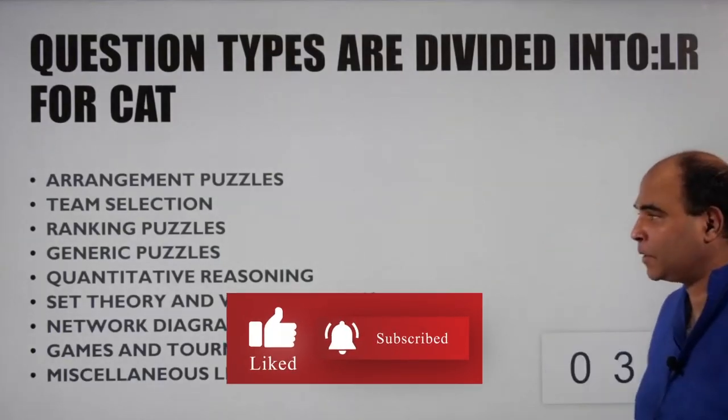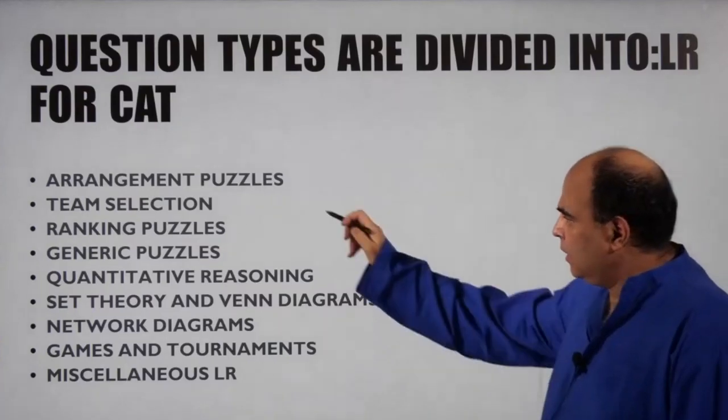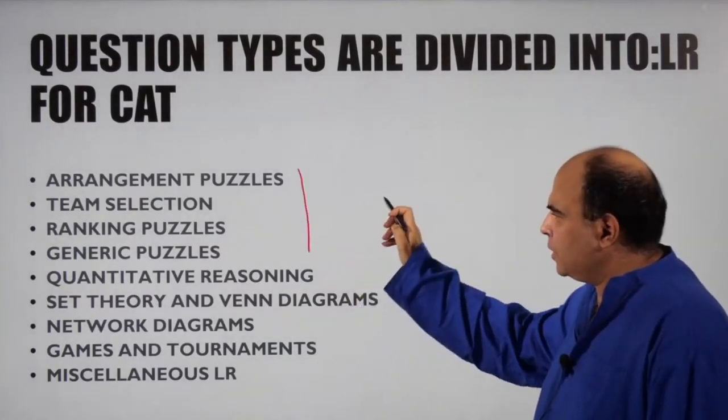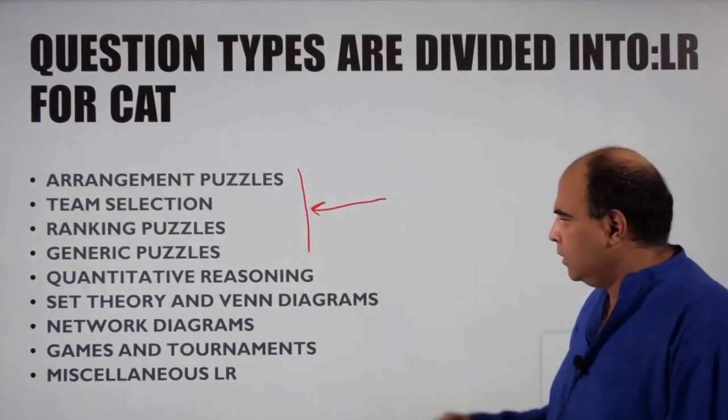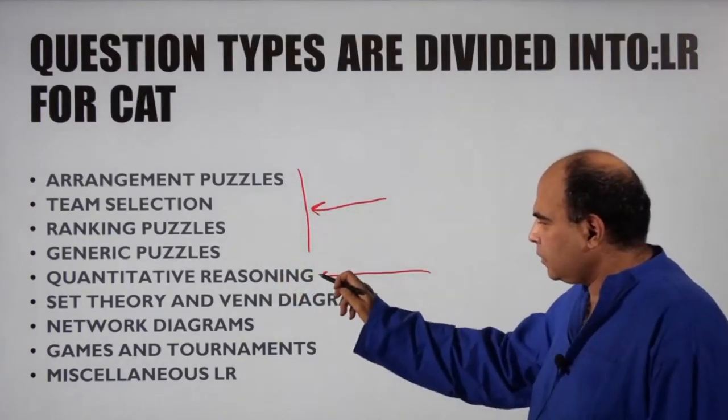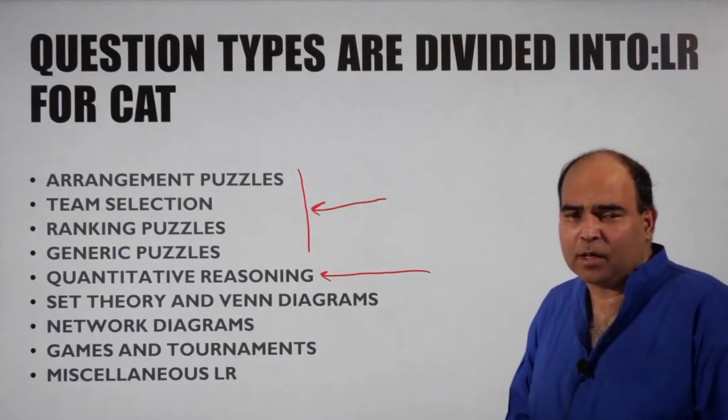For the CAT, these are the chapters, which essentially consist of four kinds of puzzles: arrangement, team selection, ranking, and generic puzzles. Then you've got quantitative reasoning, which is puzzles based on numericals.